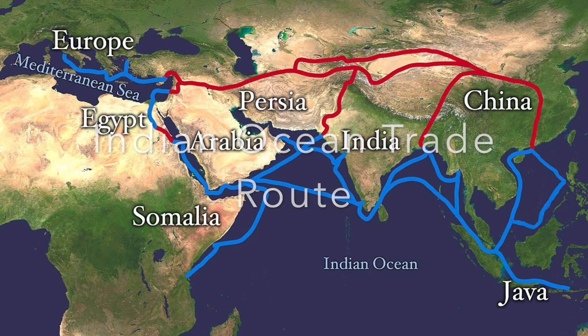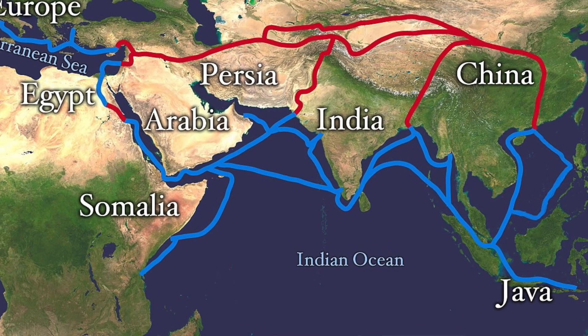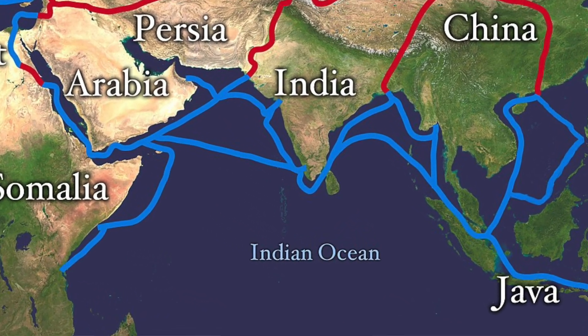Moving on now to the Indian Ocean trade route. One cause of its rise is the expansion of Islam, connecting more cities that became trade centers for merchants. Increased demand for goods also expanded this trade route. From India they're getting high-quality textiles and spices — most of the spices come from Malaysia and Indonesia and pass through India on their way to Europe. From Africa: slaves, ivory, and gold. China exports porcelain and silk. From Southwest Asia: horses, figs, and dates. These are the main goods, though there are several others.